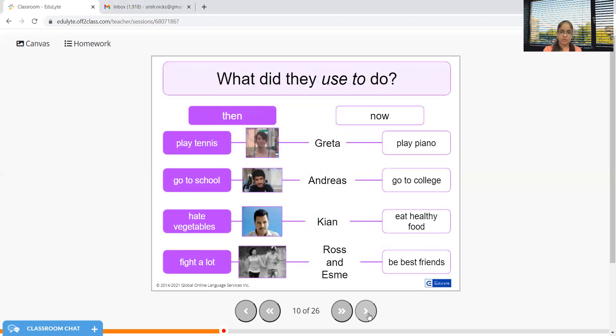What did they used to do? Can you try to make sentences from the clues available here? Grater used to play tennis, now she plays piano. Andreas used to go to school, now he goes to college. Kian used to hate vegetables, now he eats healthy food only. Ross and Esme used to fight a lot but now they are best friends.